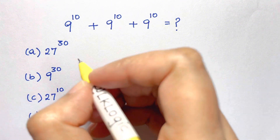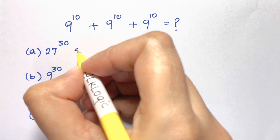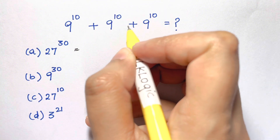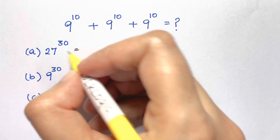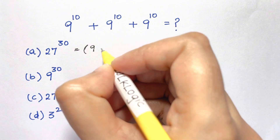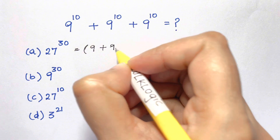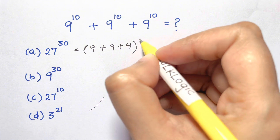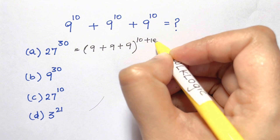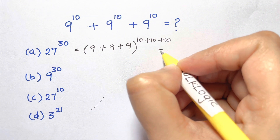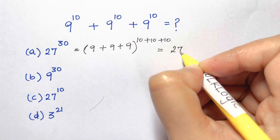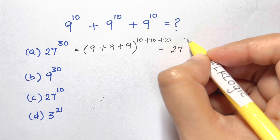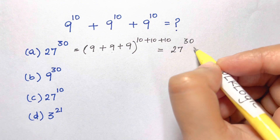We're going to try the first option: 27 to the power of 30. That is equal to the sum of all the bases to the sum of all the powers — so that is 9 plus 9 plus 9, whole to the power of 10 plus 10 plus 10, which equals 27 to the power of 30. But this answer is wrong.